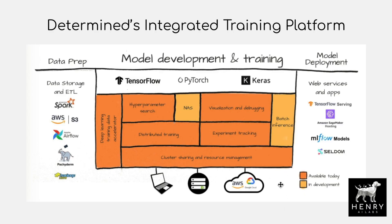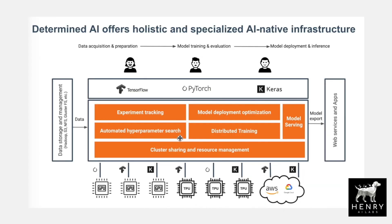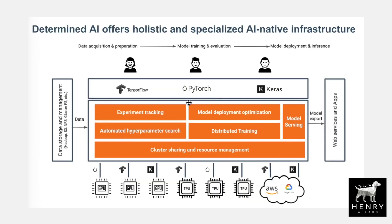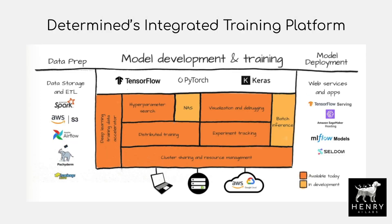We're going to start with two images that really explain the Determined platform well, commonly found in the Determined AI documentation and many of their blog posts. In orange is what's covered in the Determined training platform, and the other items are things that generally live in the deep learning and machine learning ecosystem that are also relevant for developing these pipelines.